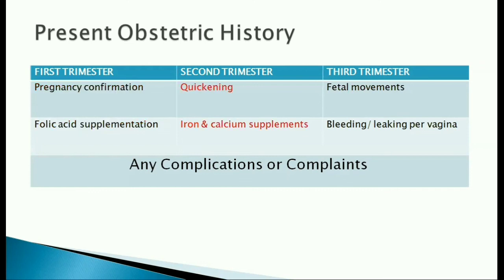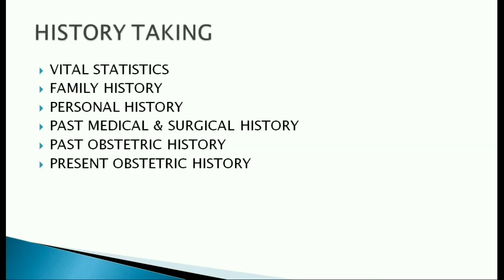In the second trimester, we ask about quickening — when she felt it for the first time — and ensure she is taking iron and calcium supplements. In the third trimester, ask about fetal movements, if she is maintaining a daily fetal movement count, and make sure it is adequate. Ask if there is any bleeding or leaking PV. Make note of any complications and complaints in each trimester. That's all about antenatal history collection.